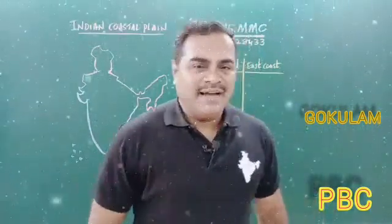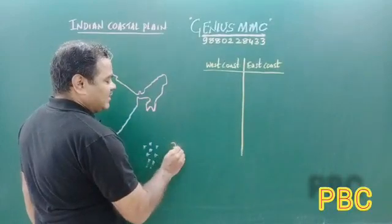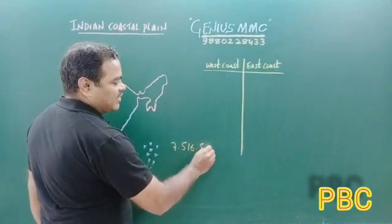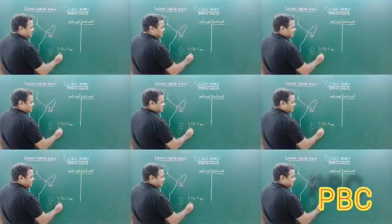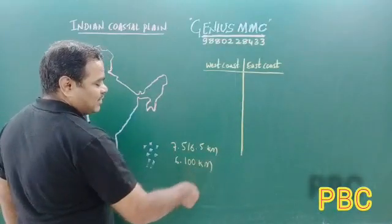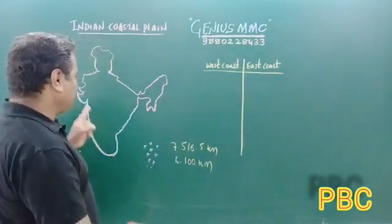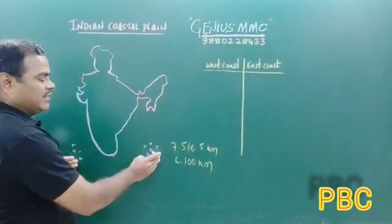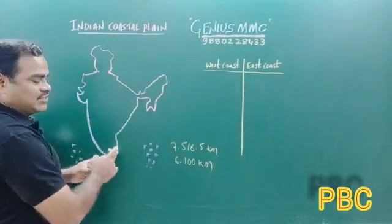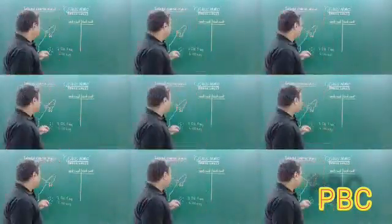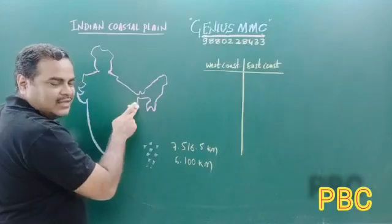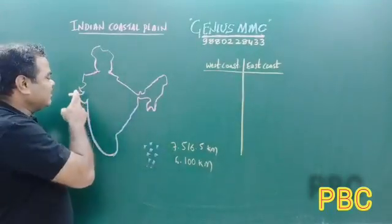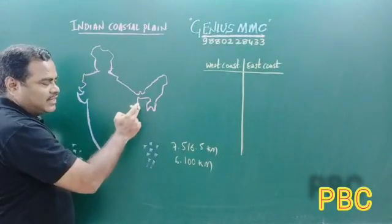India has a total coastal length of 7,516.5 kilometers including islands, and 6,100 kilometers excluding islands. The Indian coastal plain extends from Rann of Kutch in Gujarat to the Gangetic Delta in West Bengal.